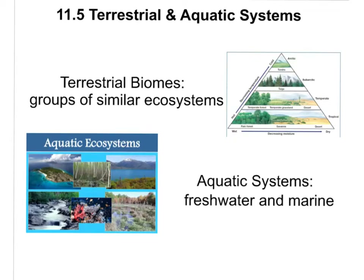Hello, biology class, and welcome to our section on terrestrial and aquatic systems. Just a little refresher here — we're going to talk about two things. First, terrestrial biomes. Biomes are just groups of similar ecosystems, and terrestrial obviously means on land. In aquatic systems, they are not called biomes. We divide the two different groups into freshwater and marine ecosystems. The marine ecosystems are divided into zones, which we'll talk about a little later. So let's start by looking at the terrestrial biomes.